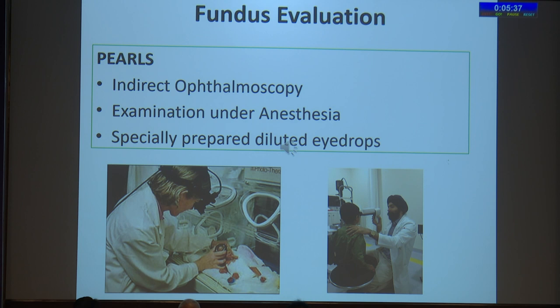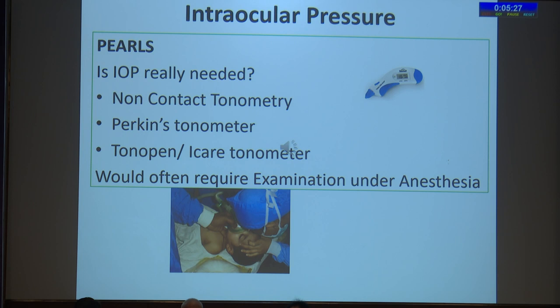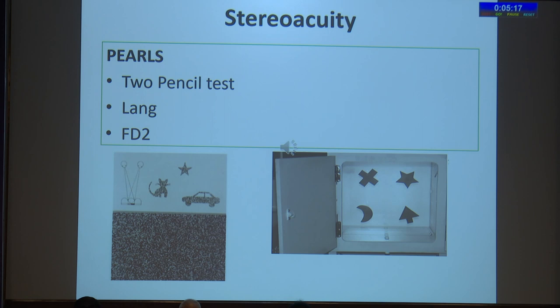Specially prepared diluted drops may be used in very small children. Intraocular pressure measurement in children is often not needed, but if it is, you can use non-contact tonometry or a Perkins tonometer. An easy option these days is to use the Tono-Pen or the iCare tonometer.